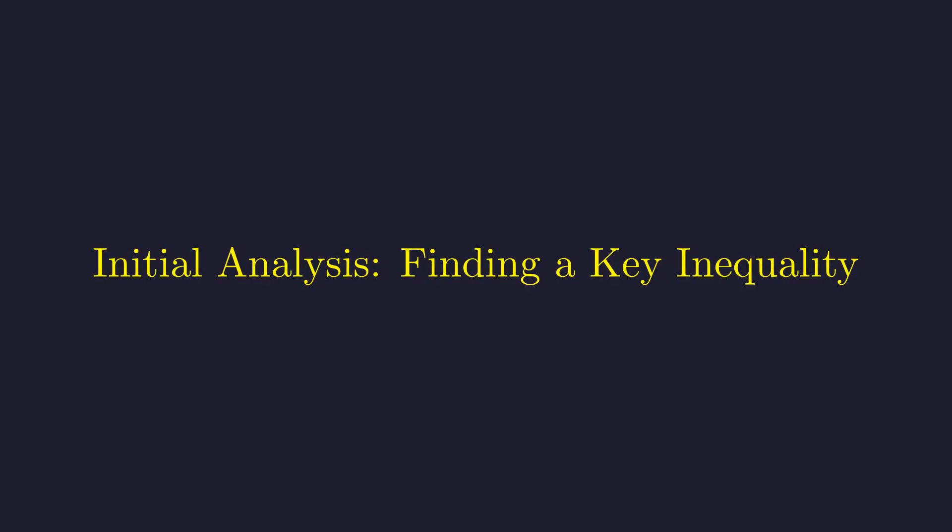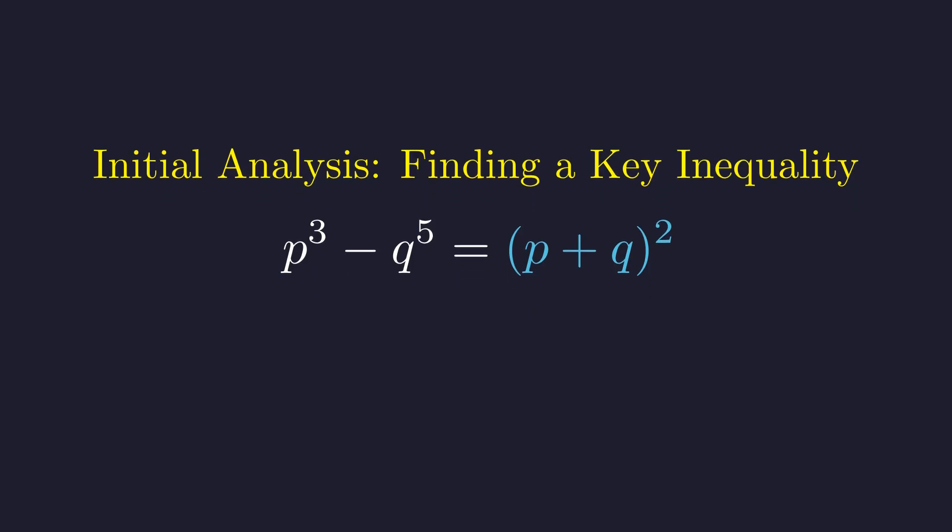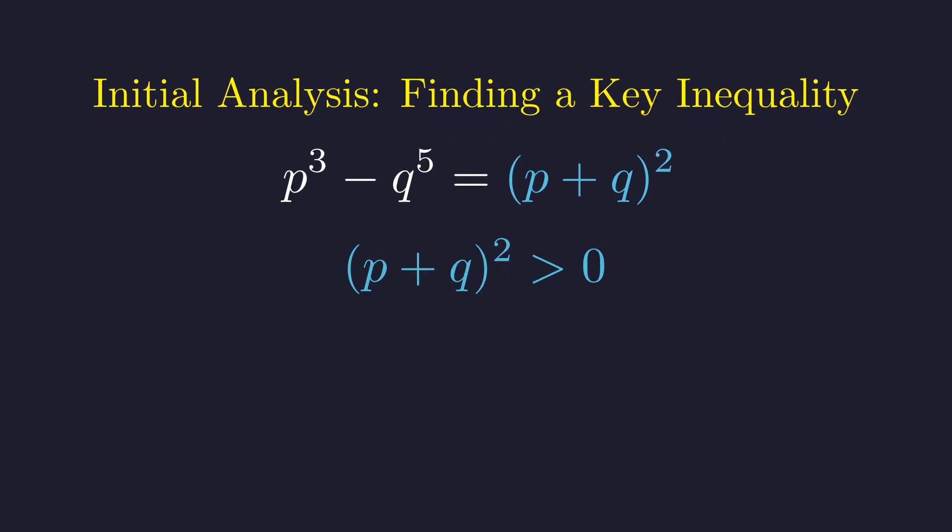The first step is to analyze the equation's structure. The properties of squares will provide an initial constraint on the relationship between p and q. We begin with the given equation. The term on the right, the square of p plus q, is strictly positive since p and q are positive integers. This observation has an immediate consequence for the left side of the equation.